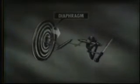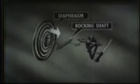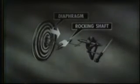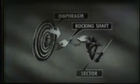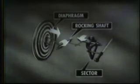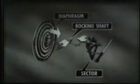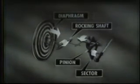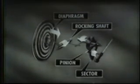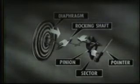Let's see how this works step by step. When the diaphragm expands, the rocking shaft is turned. This motion is transmitted to the sector, which in turn rotates the pinion and the tapered shaft with its connected pointer to give a reading on the dial.